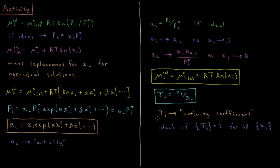Similar to the nomenclature we defined for fugacity, where we had a fugacity coefficient, here we define the activity coefficient gamma sub i, which is equal to the activity divided by the mole fraction of that component. For an ideal solution, the activity coefficient is going to equal one for all components at all mole fractions of those components in the mixture.